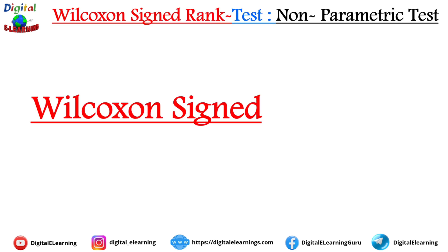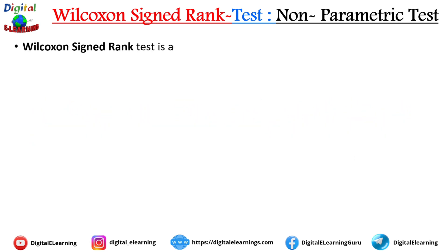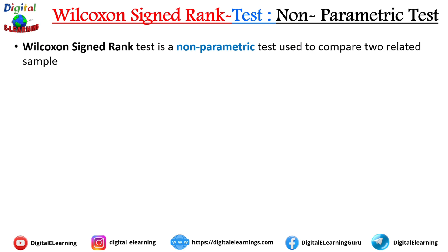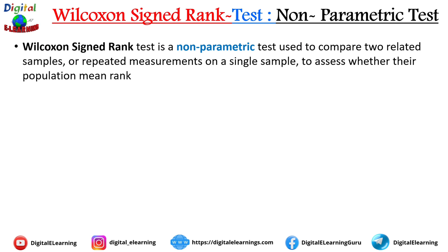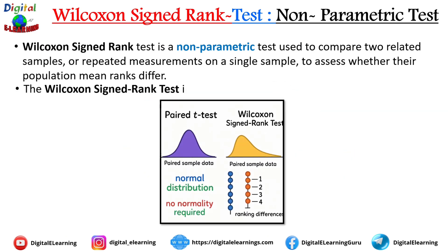Wilcoxon's signed rank test is a non-parametric test used to compare two related samples or related measurements on a single sample to assess whether the population mean rank differs. A great example is paired data — the same individuals measured before and after a certain event or treatment. Since the data is dependent here, the Wilcoxon's signed rank test is a perfect fit.